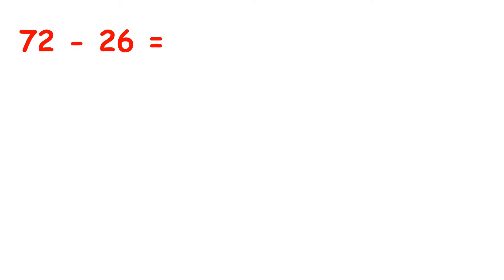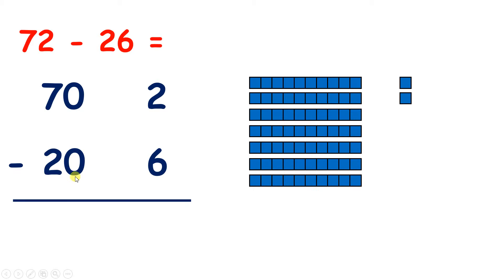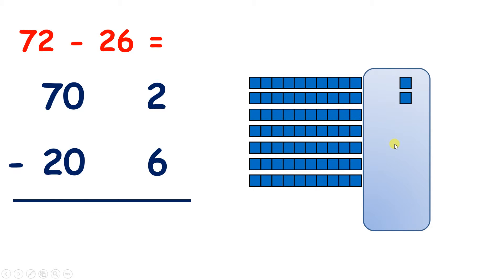Now this question is a little bit more difficult, and you'll see why in a moment. We have 72, which we can partition as 70 and 2, because we have 7 tens and 2 units. And we're subtracting 26, which we can partition as 20 and 6. So we want to subtract 20 and 6 from 70 and 2. As always, we start with the units, but I have a problem — what problem do we have? Well, I only have 2 units but I want to take away 6.